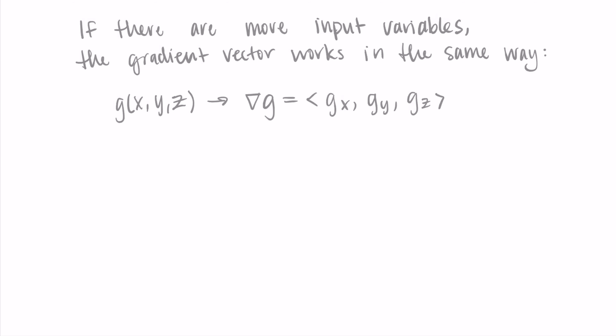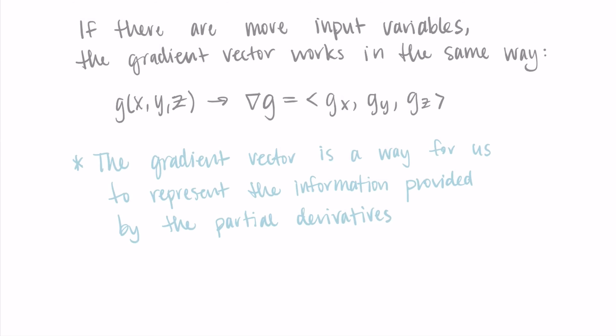The gradient vector is a way for us to represent the information provided by the partial derivatives. On their own, the partial derivatives are just equations, but the gradient vector is a nice way to contain all of the partial derivative information in vector form.